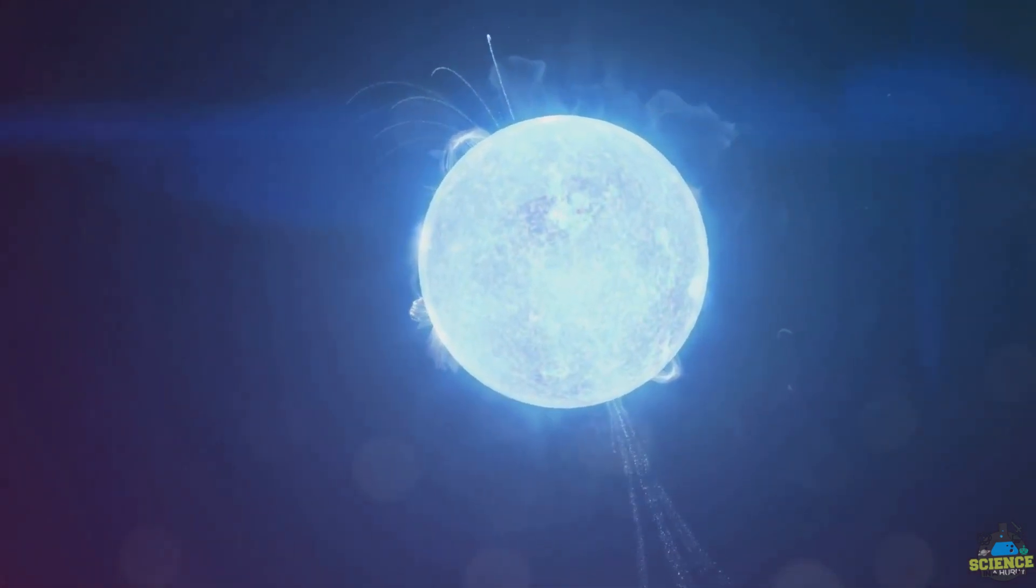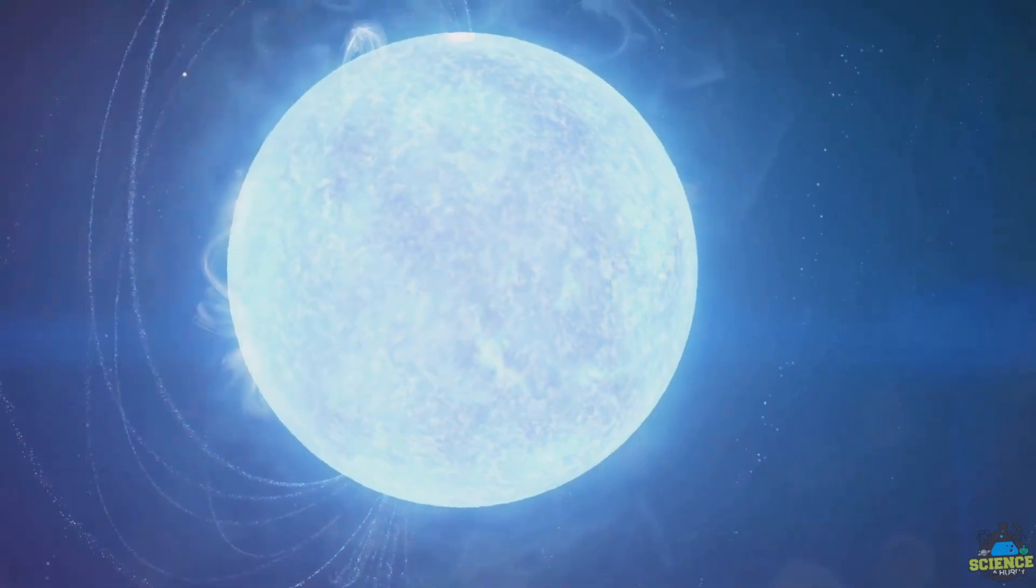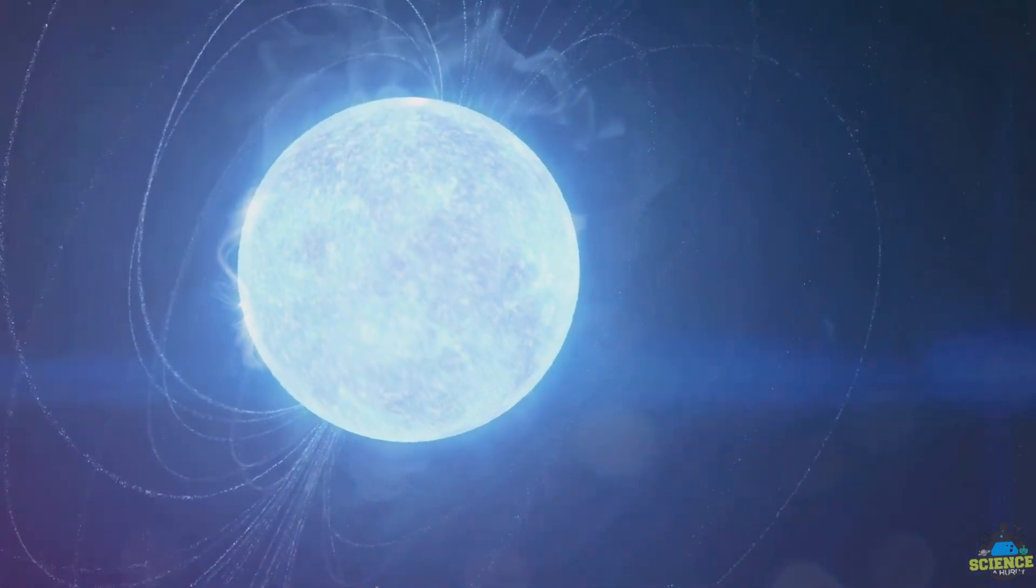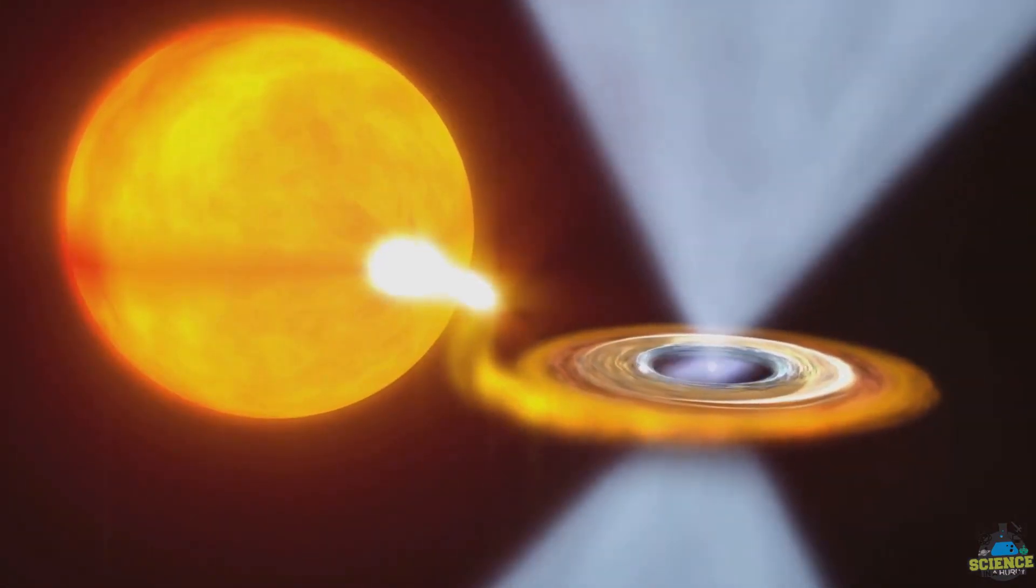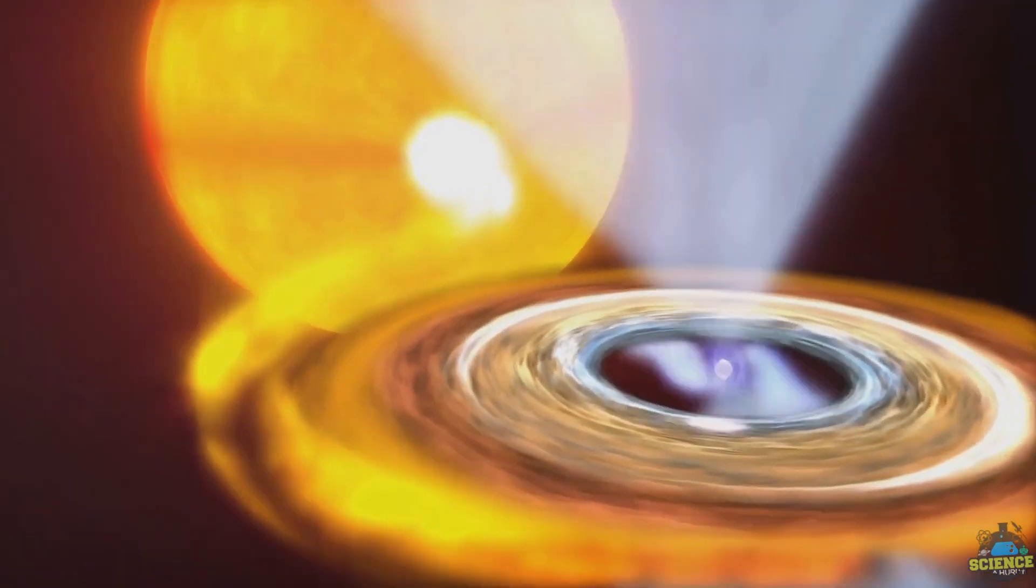In conclusion, neutron stars are compact, incredibly dense, and spin at astonishing speeds. They may appear small, but their influence on the cosmos is vast and profound, making them some of the most mesmerizing and complex objects in the universe.